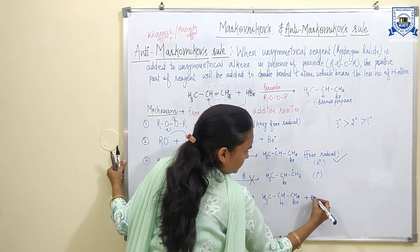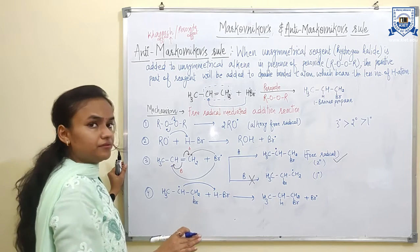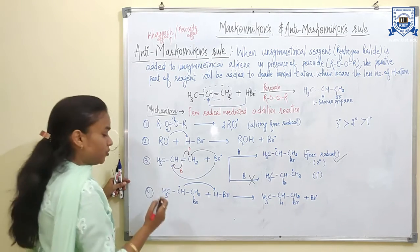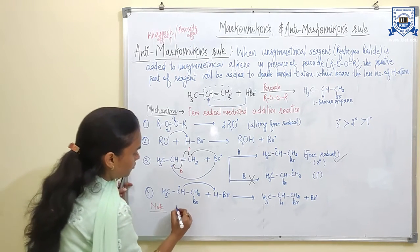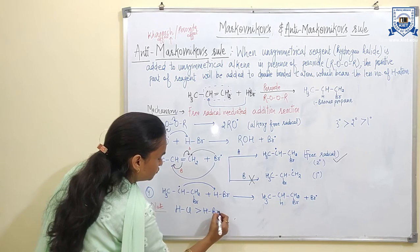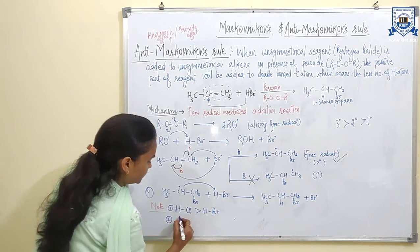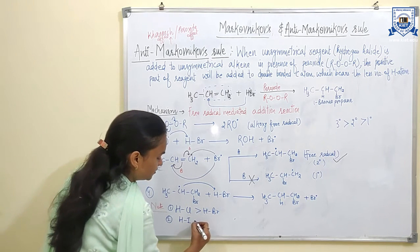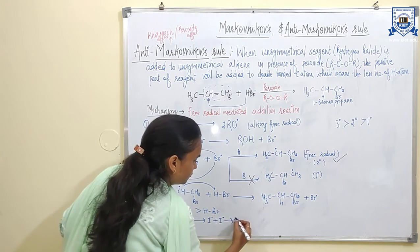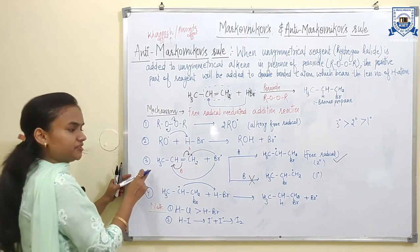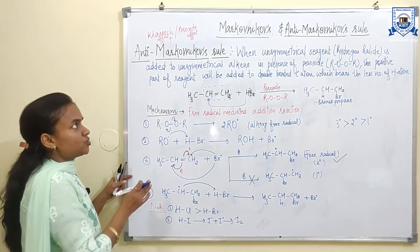The bromine free radical generated goes back and the reaction proceeds until all free radicals are consumed. Some important points regarding anti-Markovnikov's rule: HCl does not work because the HCl bond is stronger than HBr, making it difficult to cleave homolytically. HI also does not work because, although the HI bond is weaker, the iodine free radical generated couples with another iodine free radical to form iodine molecule (I₂), and so the iodine free radical does not react with the unsymmetrical alkene. These are the exceptions in the case of anti-Markovnikov's rule.